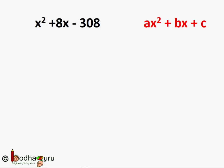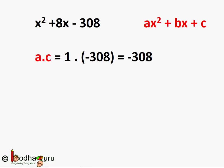The polynomial can be thought of in the form ax² + bx + c. Here in this example, a = 1, b = 8, and c = −308. We have to split the middle term b in such a way that its product equals a × c. So a × c = 1 × (−308) = −308.